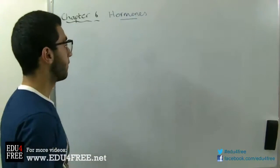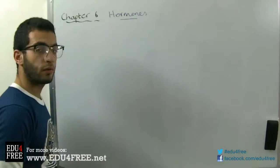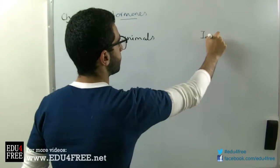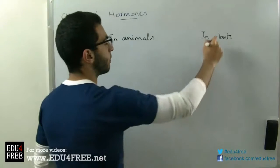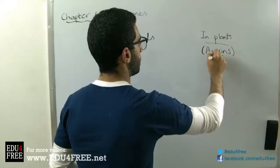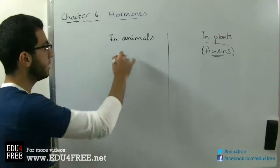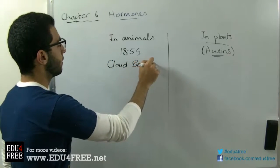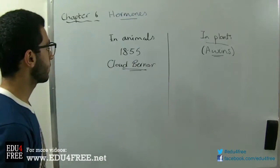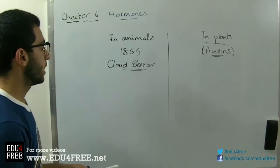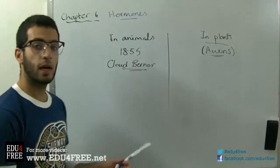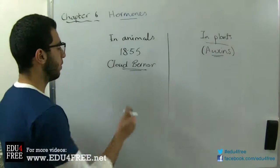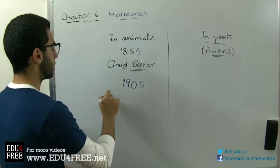We have a little bit of historical notes about the discovery of hormones in animals and in plants. By the way, hormones in plants are not called hormones — they are called auxins. In 1855, a scientist called Claude Bernard hypothesized that the sugar stored in the liver is an internal secretion of the liver, while the bile duct, which secretes the bile, he considered this as an external secretion of the liver.